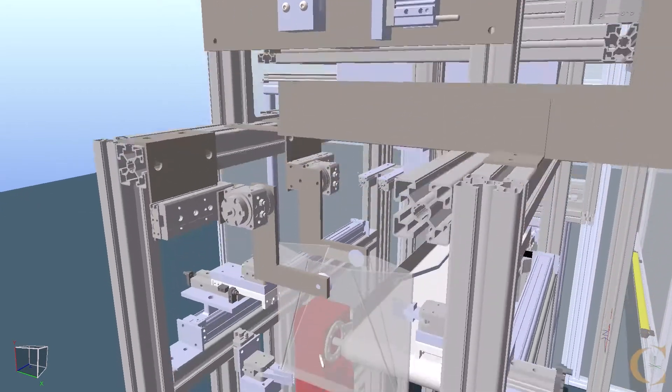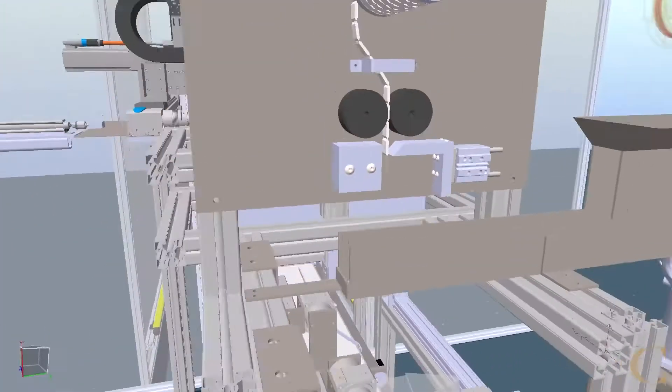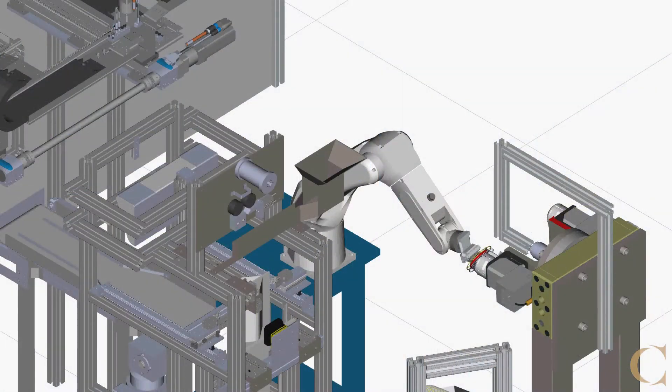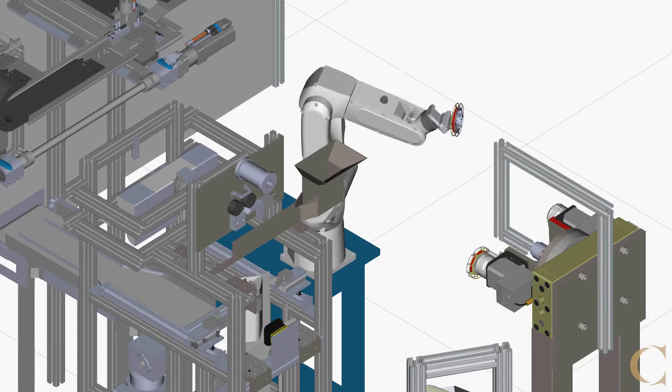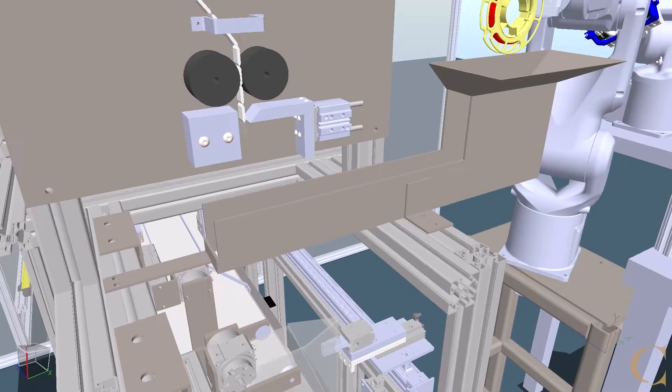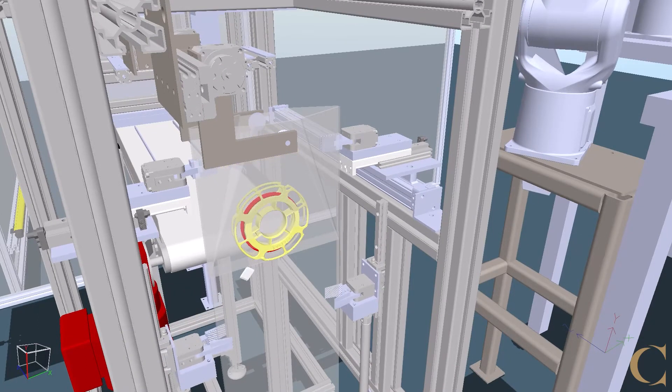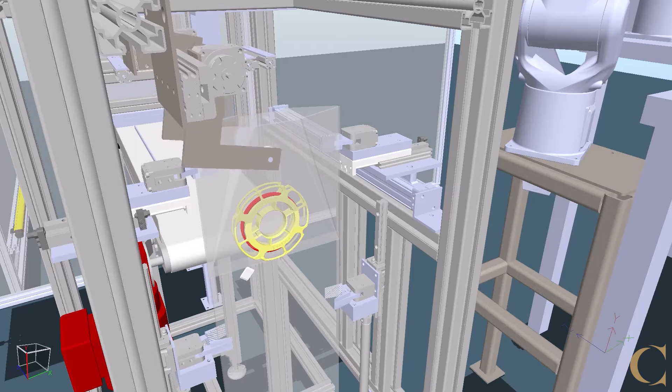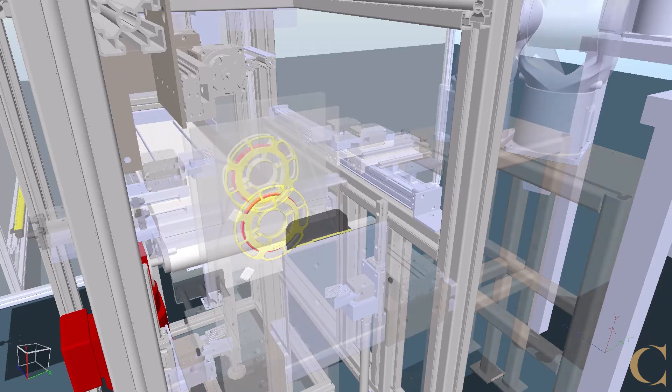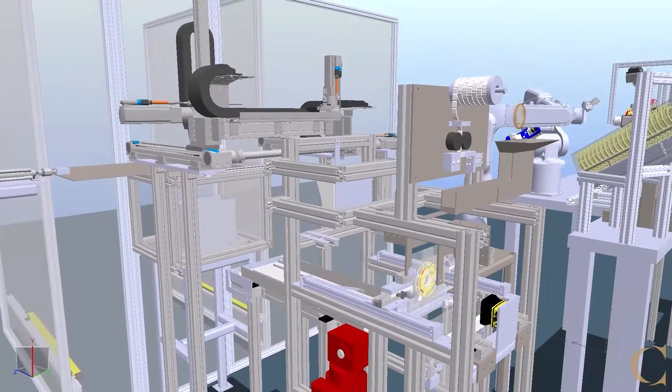A desiccant packet is dispensed into the bag, followed by a robot dropping off the finished spool from the spooling station. Next, after a vision inspection to confirm the spool is in place, the bottom of the bag is cut through. It is then transferred to be vacuum sealed.